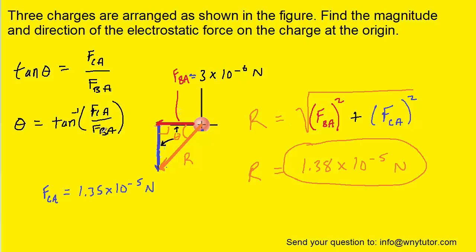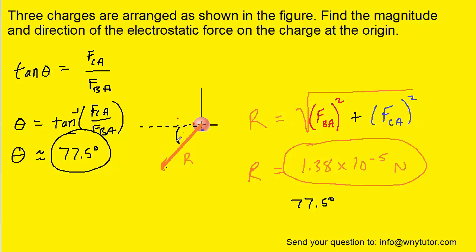What you'll do is plug in the value for FCA, the value for FBA, divide them and take the inverse tangent. You should get approximately 77.5 degrees. You can express your answer for the direction as 77.5 degrees. You'll notice that that angle is measured below the negative x-axis. This direction over here is our negative x-axis. The direction in the opposite way is the positive x-axis. So you can say 77.5 degrees below the negative x-axis as the overall direction of the resultant force acting on the charge at the origin.